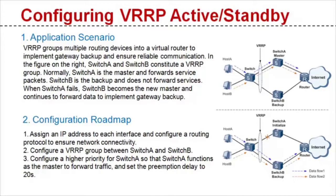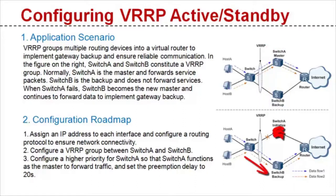VRRP groups multiple routing devices into a virtual router to implement gateway backup and ensure reliable communication. In the figure to the right, switch A and switch B constitute a VRRP group. Normally, switch A is the master and forwards service packets. Switch B is the backup and does not forward services. When switch A fails, switch B becomes the new master and continues to forward data to implement gateway backup.